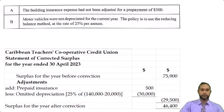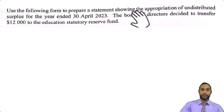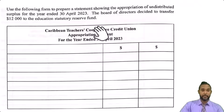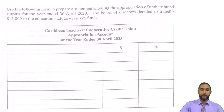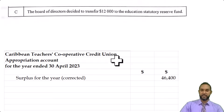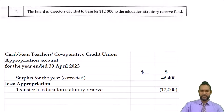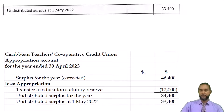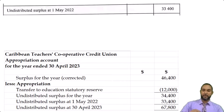Let's take a look at Part B. Part B says: use the following form to prepare a statement showing the appropriation of undistributed surplus for the year ended 30th April 2023. The Board of Directors decided to transfer 12,000 to the Education Statutory Reserve Fund. So we're going to start with the corrected surplus of 46,400. Then we take into consideration that 12,000 transfer to the Education Fund. There's no other appropriation, so the undistributed surplus for the year is 34,400. And to that, we're going to add the 33,400 brought forward from last year, giving us 67,800 for the total undistributed surplus now being carried forward.